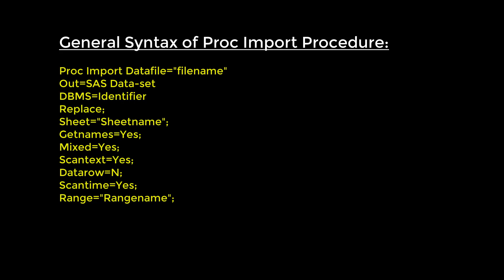The DATAFILE option tells us where to find the Excel file that one wants to import into the SAS environment. The OUT option tells us to create a SAS data set with any name of your choice. By default, the imported data set is going to be saved in the work library. However, if somebody wants to save it into a permanent library, one can do that as well.